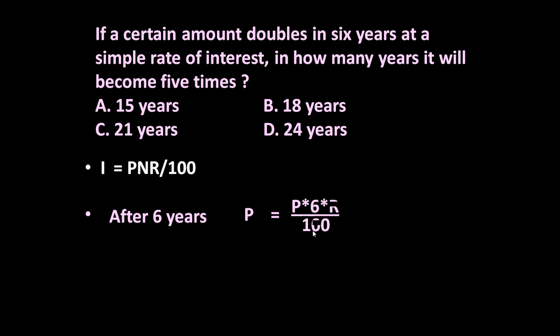So after 6 years, P will be equal to P into 6 into R upon 100. Because this interest will become equal to the principal, then only he will have total 2P amount with him after 6 years. Let us call it as equation number 1.